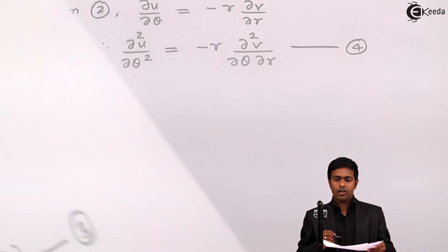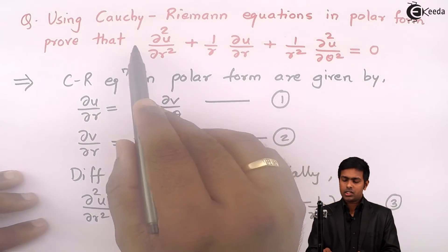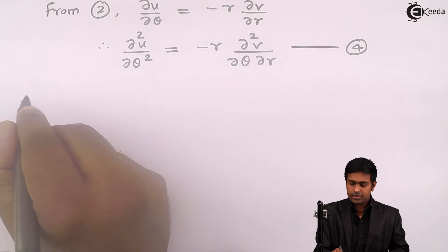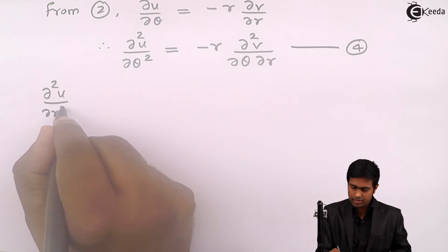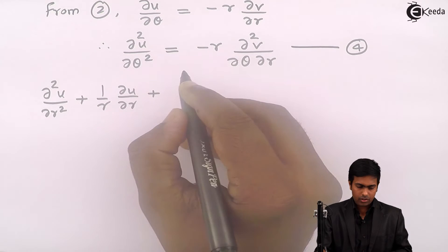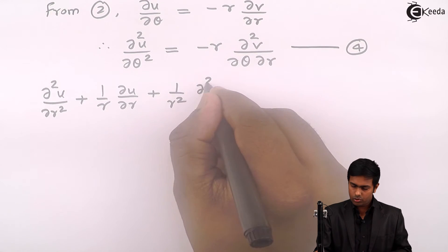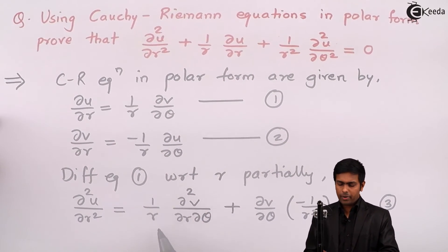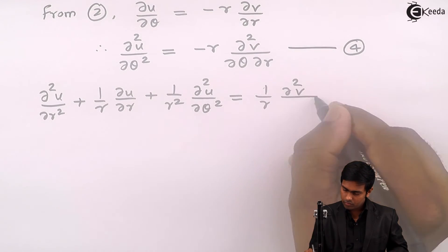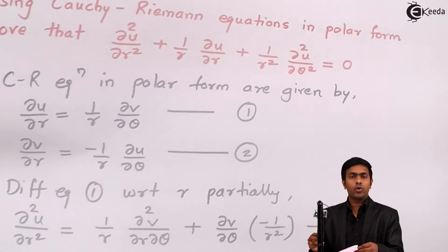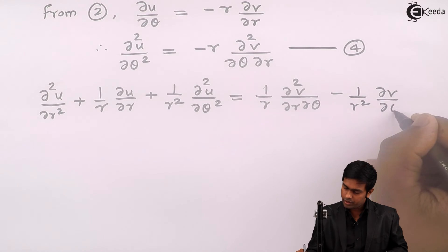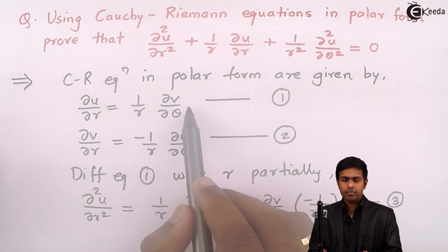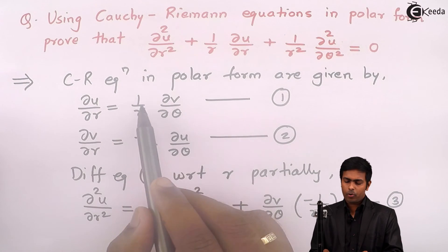Now we have the values for the second-order derivatives. Let us substitute all values into the left-hand side: ∂²u/∂r² + (1/r)(∂u/∂r) + (1/r²)(∂²u/∂θ²). Substituting equation 3 for ∂²u/∂r² gives (1/r)(∂²v/∂r∂θ) - (1/r²)(∂v/∂θ). For the second term, ∂u/∂r from equation 1 multiplied by (1/r) gives +(1/r²)(∂v/∂θ).